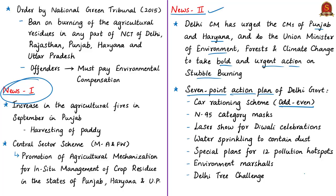One of the seven points is bringing in the odd-even car rationing scheme during November 4 to 15 as an emergency measure. People will also be given N95 category masks free of cost, as these masks help arrest particulate matter from entering the respiratory system. The Supreme Court has banned bursting of crackers for Diwali, and Delhi government is organizing a laser show for people. Water sprinkling mechanisms to suppress dust are also part of the plan.